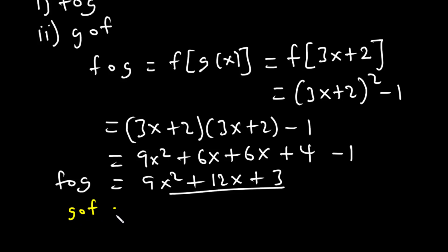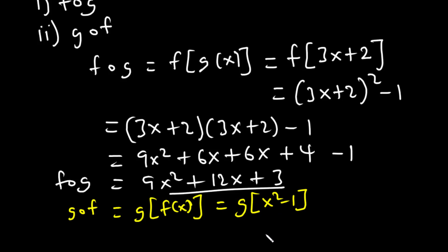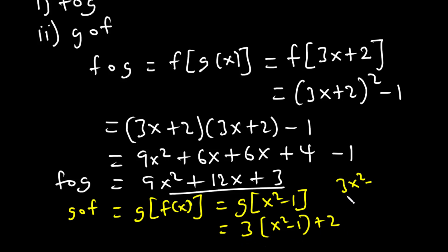Now let's find g(f(x)). g(f(x)) = g(f(x)) where f(x) = x² - 1. Since g is 3x + 2, we have 3(x² - 1) + 2. Now 3 times x² is 3x², and 3 times -1 is -3, plus 2, which equals 3x² - 1.